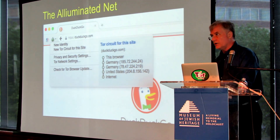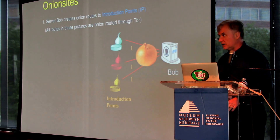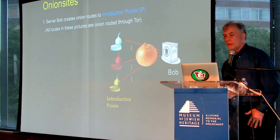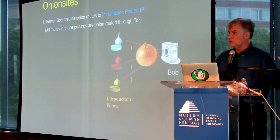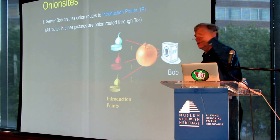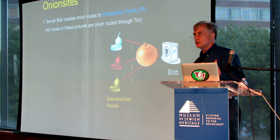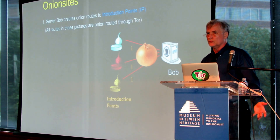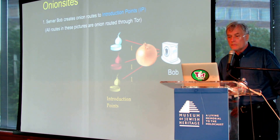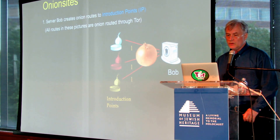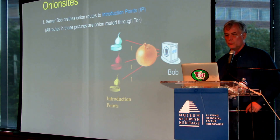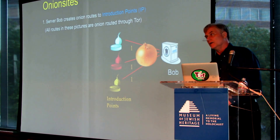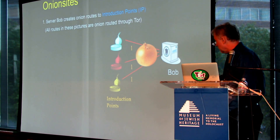So that's Tor in general. Now I'm going to talk a little bit about Onion Sites. People often run Tor and Onion Sites and all this stuff together under the rubric of the dark web, but this is the part that they often most specifically mean.